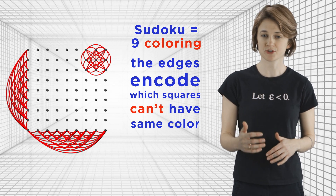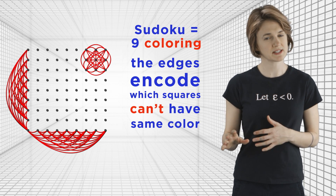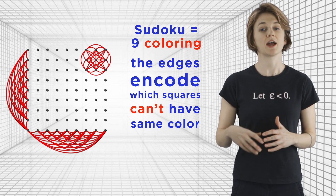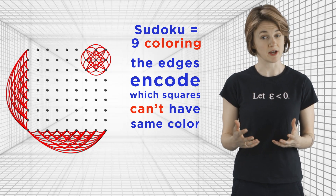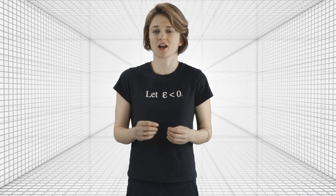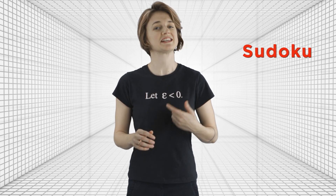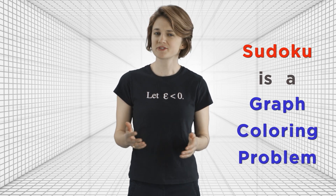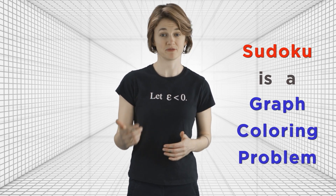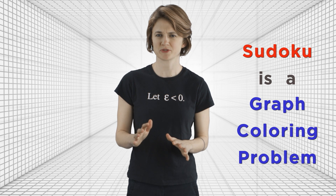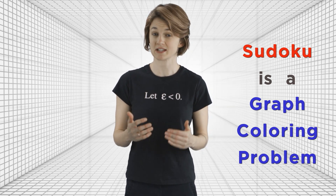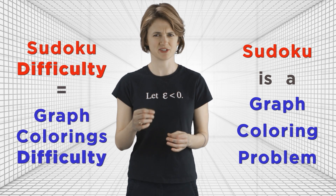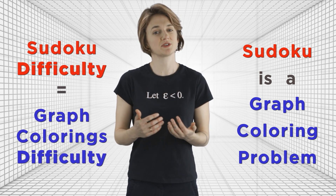A Sudoku begins with a certain number of squares filled out, which is equivalent to saying that our graph is partially colored, and your task is to color the remaining vertices so that you end up with a nine coloring. Graph colorings are a really well studied branch of math, so you can apply that knowledge to Sudoku. It's not exactly going to help you solve a Sudoku, because figuring out how to properly nine-color a graph is exactly as hard as solving a Sudoku puzzle. But it can provide you with new tools and perspectives.